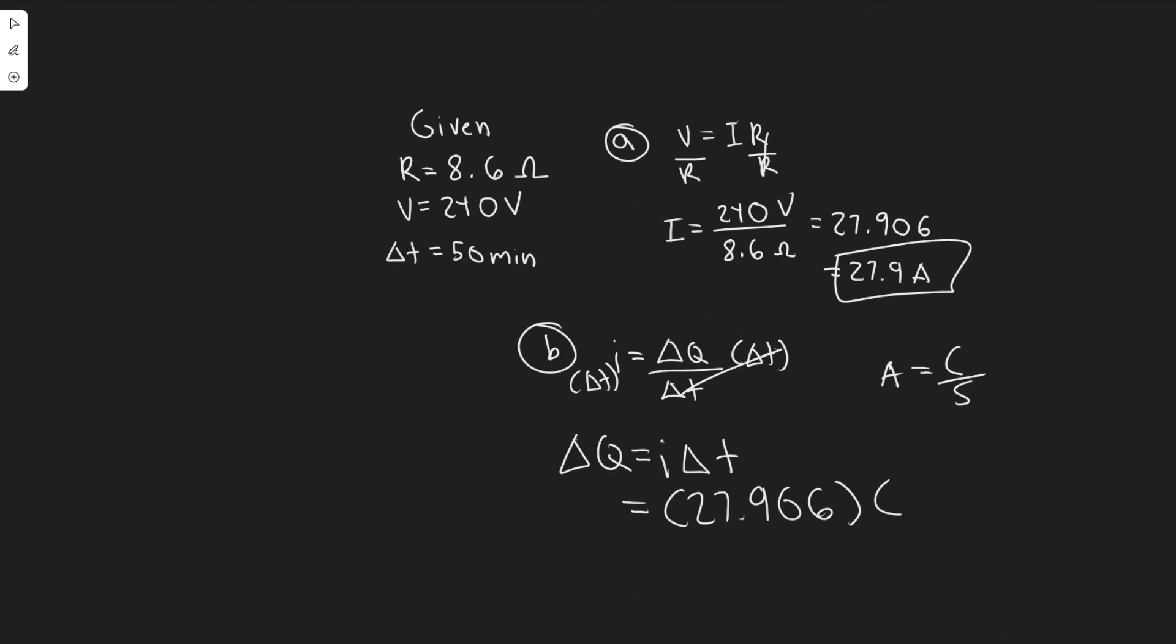To convert from minutes to seconds, all you have to do is multiply by 60 because there are 60 seconds for every minute. So 50 times 60—that's where this comes from. Now it's in seconds, which will work. So 27.906 times 50 times 60.